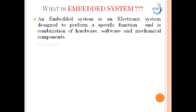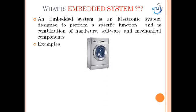An example of an embedded system is a washing machine. It is an electronic system designed to perform a specific function — to wash clothes. It is a combination of hardware, software, and mechanical components. The hardware includes buttons such as start, stop, display, and buzzer. The software is a chip on the circuit that controls and monitors various operations. The mechanical components are the internals of the washing machine that wash the clothes and control the input and output of water.